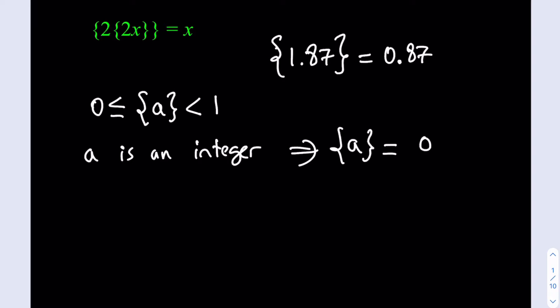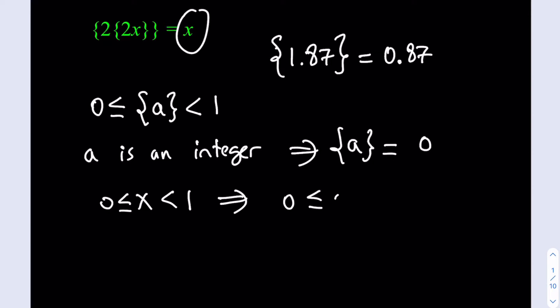Since we have the fractional part on the outside, which needs to be between 0 and 1, this also shows that x needs to be between 0 and 1. If we multiply everything by 2, then 2x is going to be between 0 and 2. This is a wide range, so we need to narrow it down.